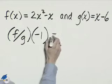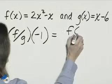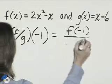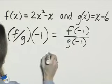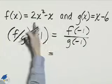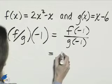We can write this as f of negative 1 divided by g of negative 1. We'll replace the x with negative 1 in each function and simplify.